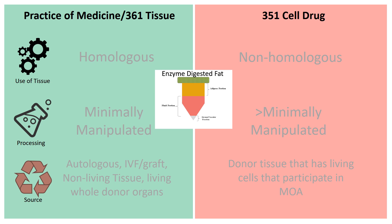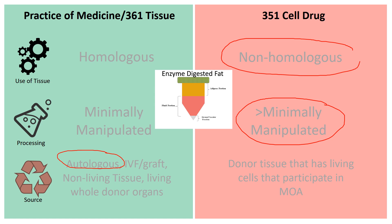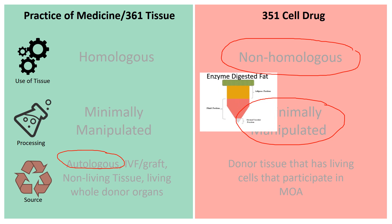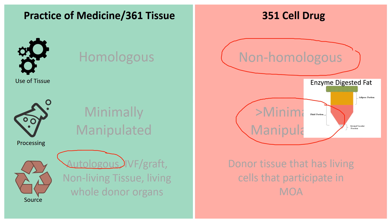If we talk about enzyme-digested fat, or stromal vascular fraction, it's going to be a little different, because this is more than minimally manipulated based on the current regulations. It is autologous. But the problem is that belly fat, for instance, doesn't really participate in cartilage healing. So that's going to be non-homologous, and it's going to go off to the right side.